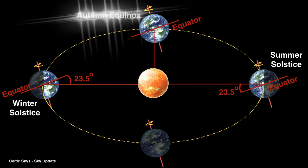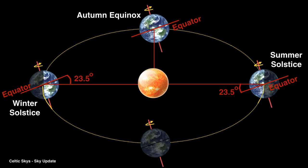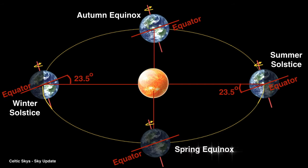But in between these two states we reach a point where the north and south poles are equidistant from the Sun, and at that moment in time day and night are exactly 12 hours each all over the planet. These points are known as the equinoxes — the autumn equinox and the spring equinox.